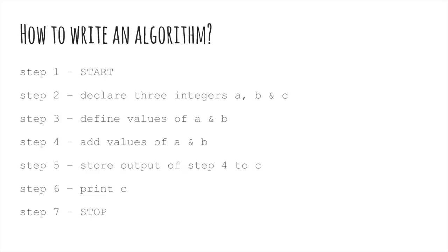In the second step, we will declare three integers a, b, and c. In the third step, we will define the values of a and b. So these are the two values that we will be adding together. Obviously, that's what we do in the fourth step. We add these values. And in the fifth step, we store the output of the addition as the value c. So now c will be equal to a plus b. In the sixth step, we print c, so we output it, and in the seventh step, we stop the algorithm or the program.